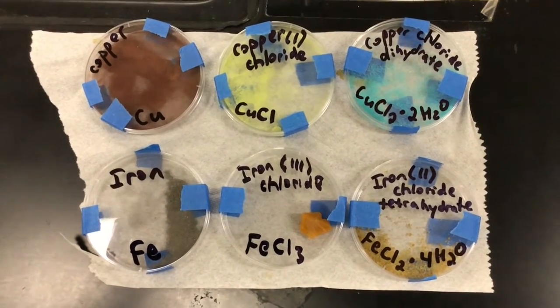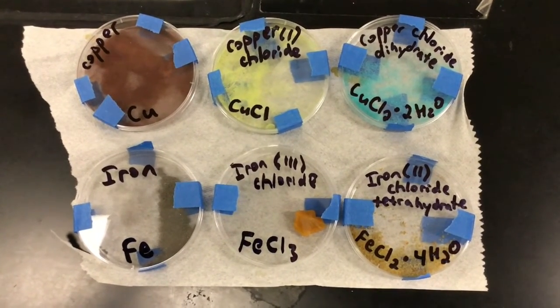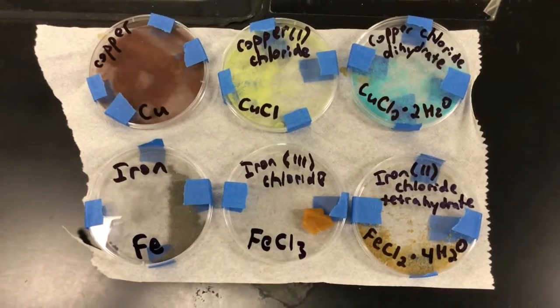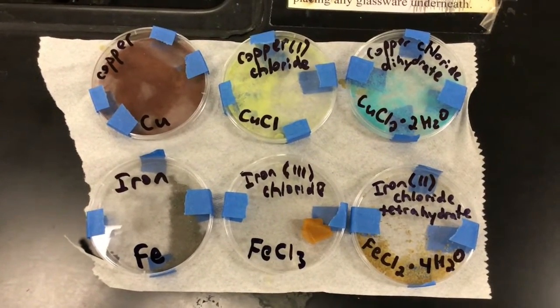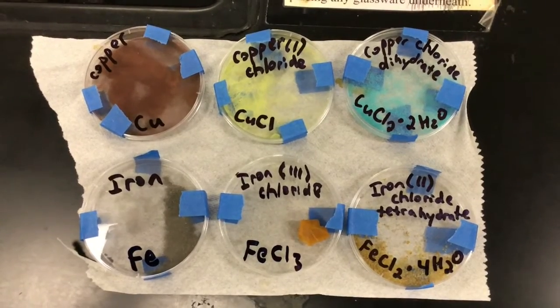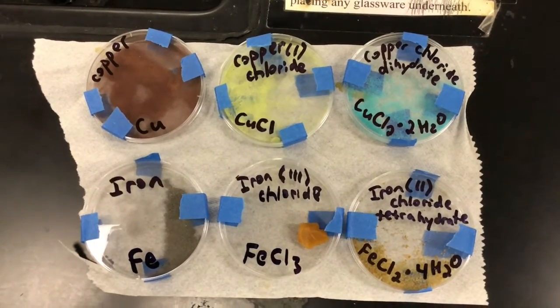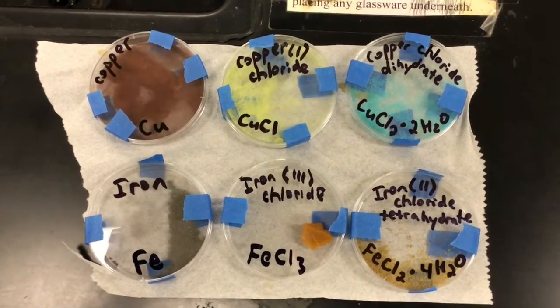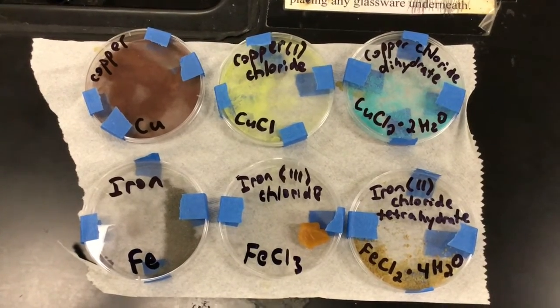The second part of the lab involves figuring out what our substances are, and one way we can do it is to compare our things with known substances. This is a snapshot of all the known substances. I'm going to zoom in on some of these here.